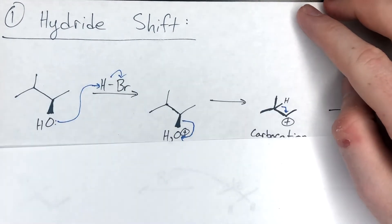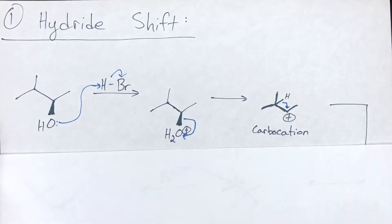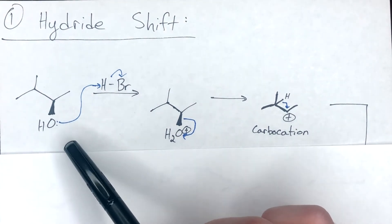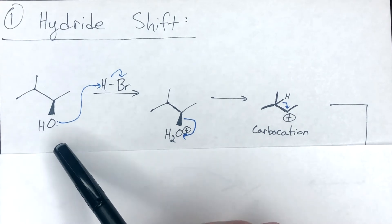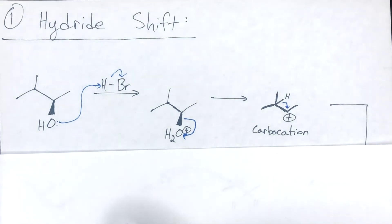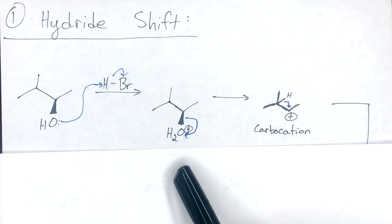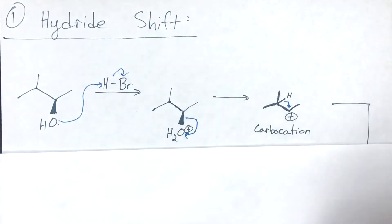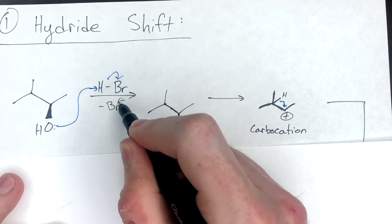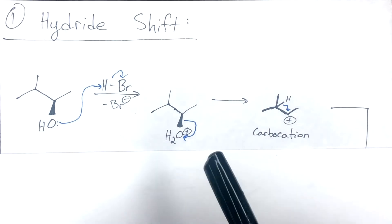We're going to look at an SN1 reaction that proceeds through dehydration of 3-methyl-2-butanol. The pathway starts simply: you have a Lewis base–Lewis acid reaction where the oxygen acts as the Lewis base and pulls off the acidic proton from HBr. This produces water still bound to your alkyl chain as OH₂⁺, and Br⁻ is produced as a byproduct. That Br⁻ is going to be important later.